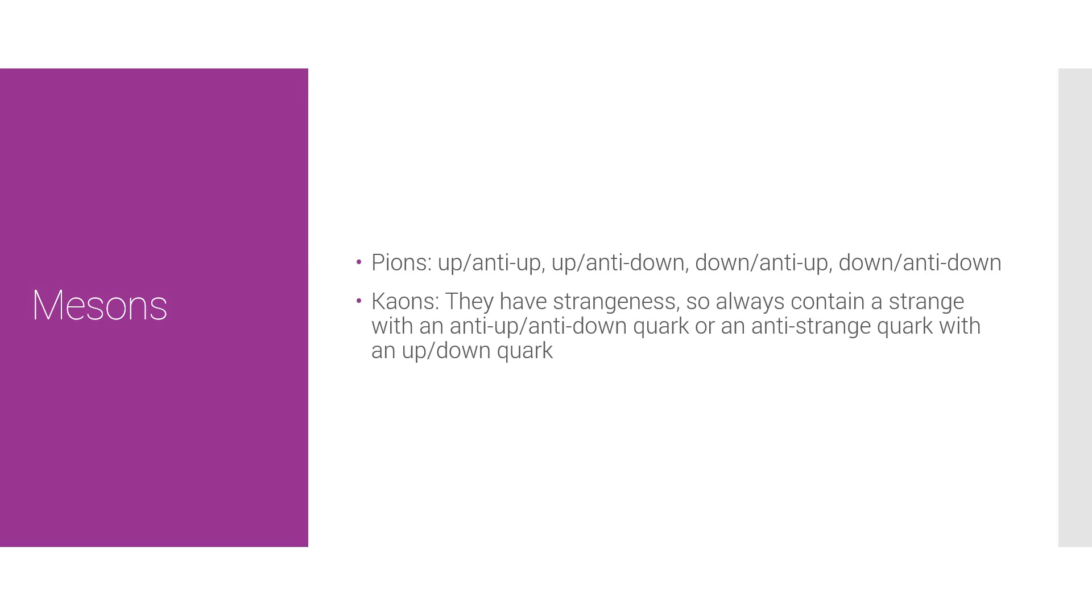Kaons, however, they have strangeness, so they always contain a strange quark with either an anti-up or an anti-down, or an anti-strange quark with an up or down quark. Now, strangeness is strange, okay, that's why I've been dodging the topic for a while. It's just a quantum property, a quantum number, it's a property that all quarks have.